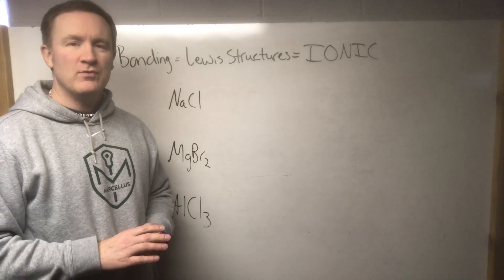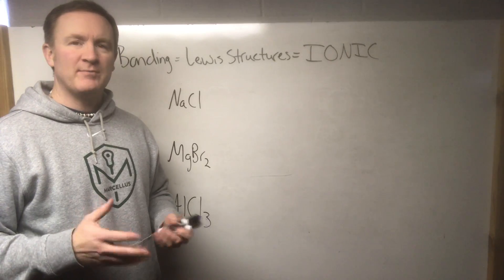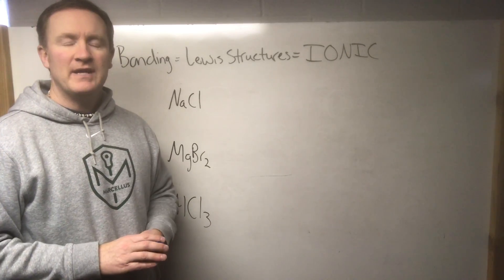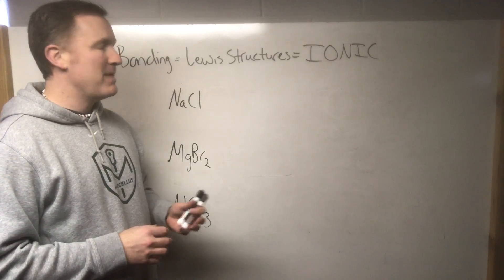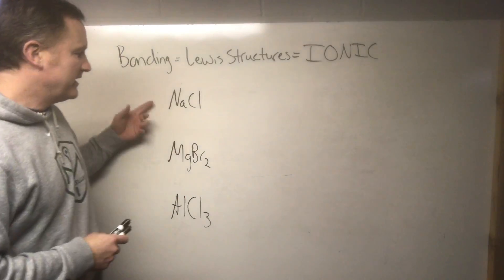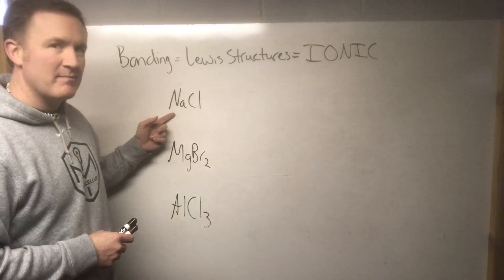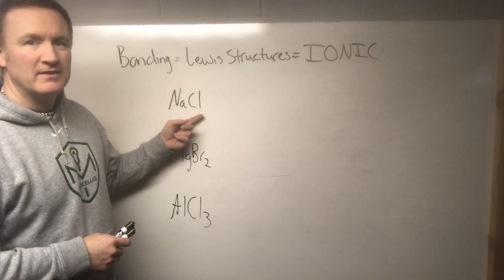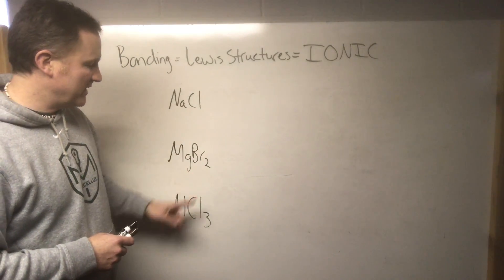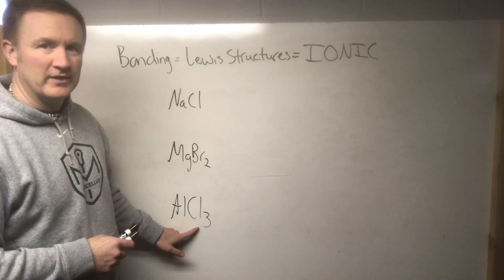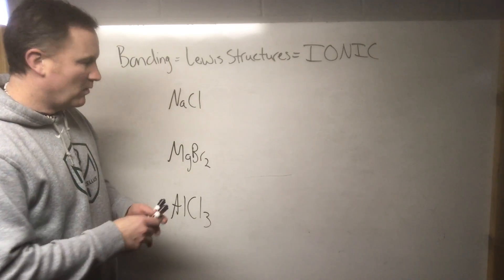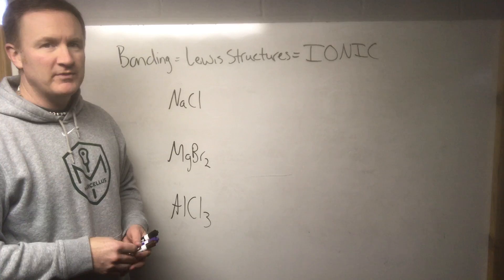According to your New York State chemistry reference table or basically any periodic table, in order to find ionics you're dealing with a metal and a nonmetal. In the three examples we have here, I have a metal and then a nonmetal: sodium and chlorine, magnesium and bromine, and aluminum and chlorine.